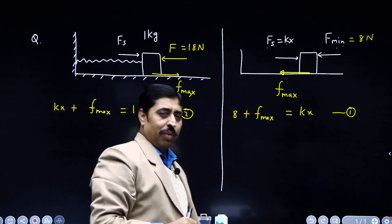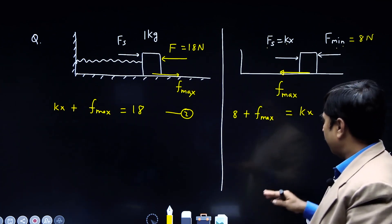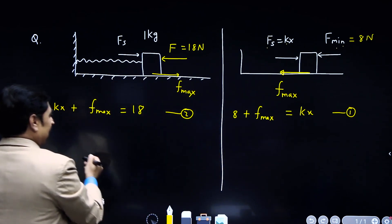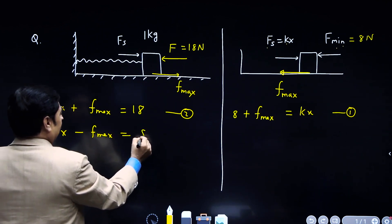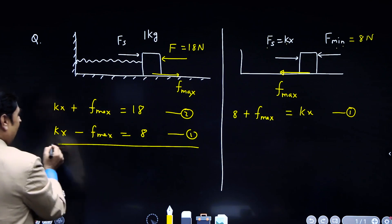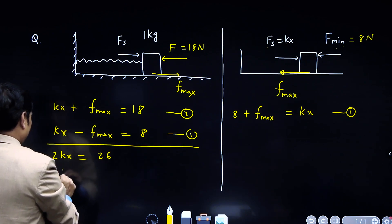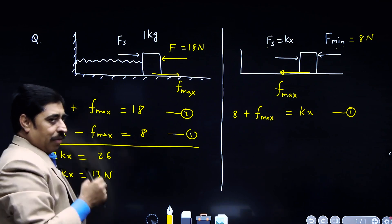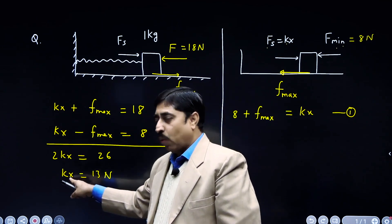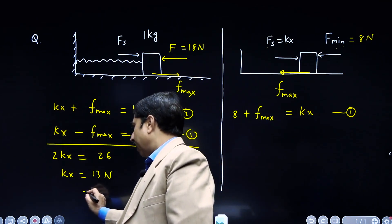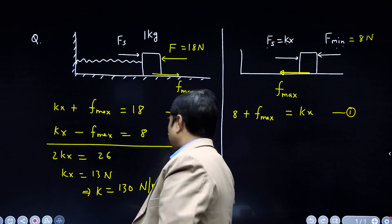By solving equation 1 and equation 2 we can find K·X and f_max. Adding the two equations gives 2·K·X = 26, so K·X = 13 Newton. Since X, the compression in the spring, is 0.1 meter, the value of K is 130 Newton per meter. That is the force constant of the spring.